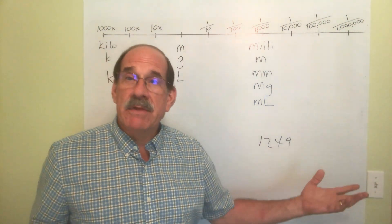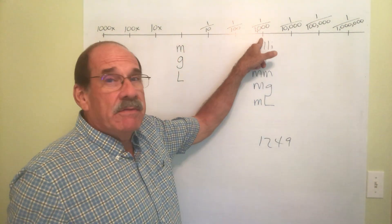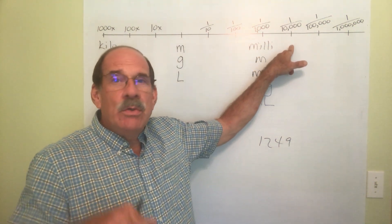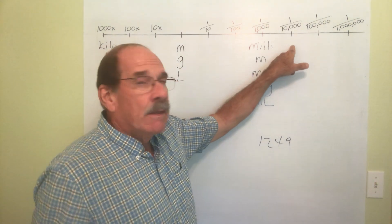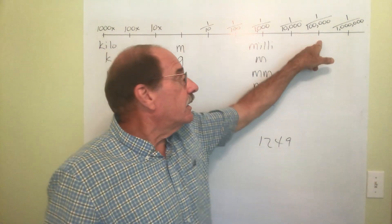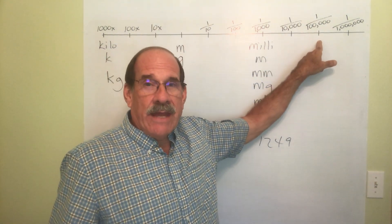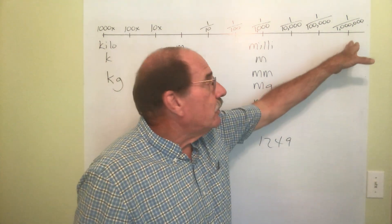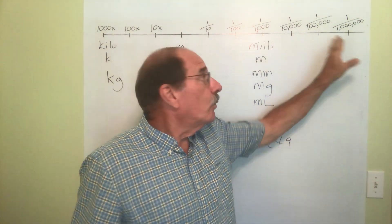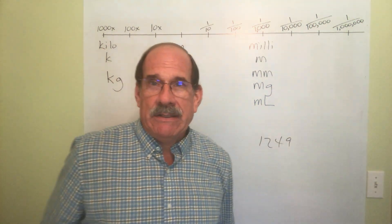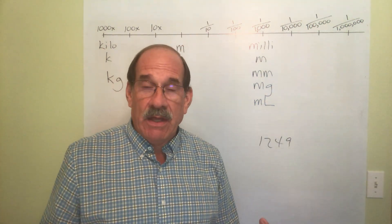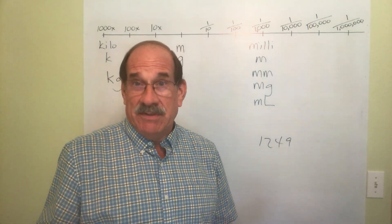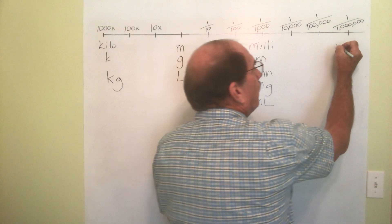Let's keep getting smaller by one-tenth of the previous. One-tenth of a thousandth is one ten-thousandth — there's a word for that you don't need. One-tenth of that is one hundred-thousandth — don't need that either. One-tenth further is one-millionth of something. The word for one-millionth is micro.